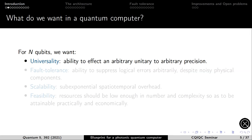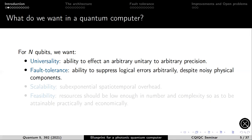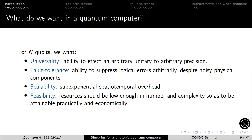At a high level, the first question is: what do we actually want in a quantum computer? For n qubits, we want universality — the ability to affect an arbitrary unitary to arbitrary precision. We want fault tolerance so that, despite having noisy physical components, we can suppress errors at the logical level. We want scalability, so the resources aren't exponential, and we want feasibility, meaning the resources required to build it are practical and economical.